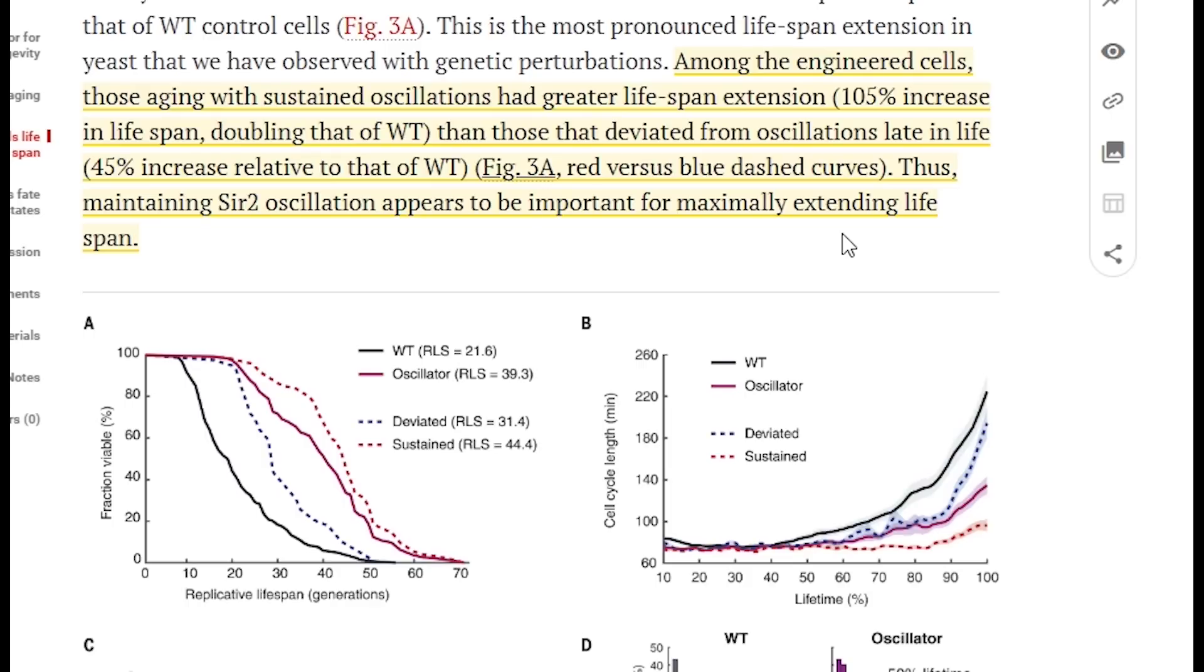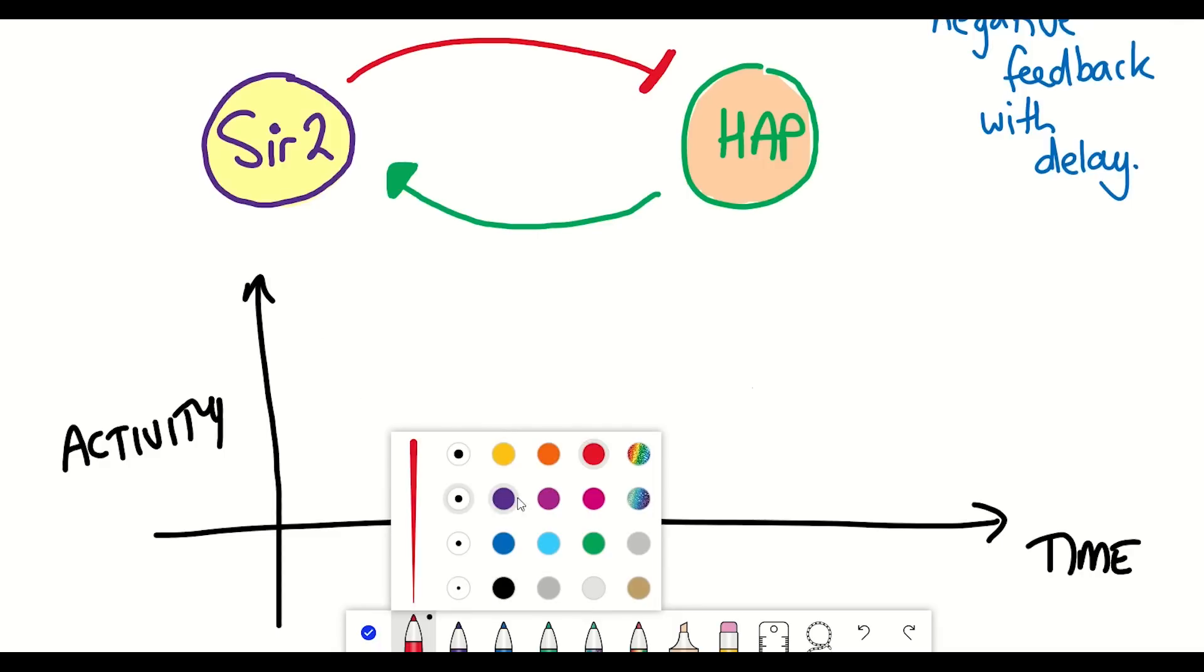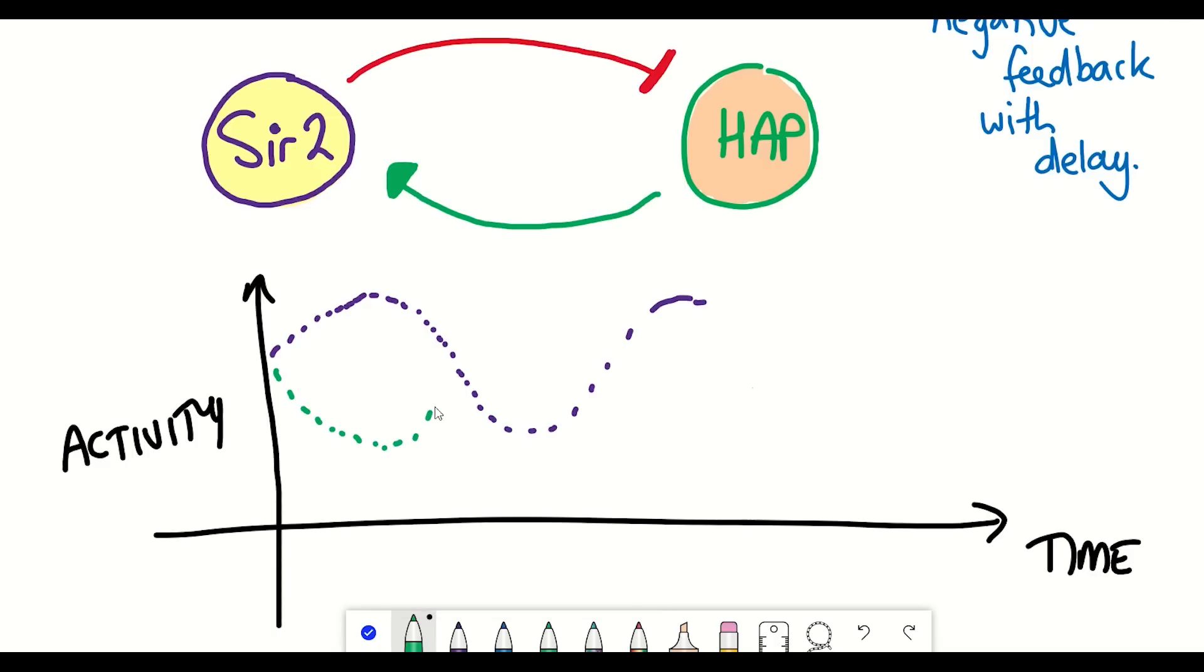Whilst those with the deviated oscillations still had a 45% increase relative to that of the wild type, the unmodified strains. Therefore maintaining these oscillations appears to be important for maximally extending lifespan, essentially keeping the cell in a prolonged state of indecision.